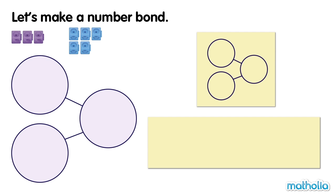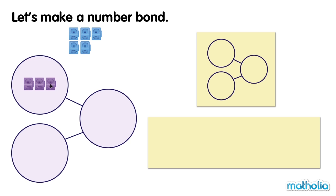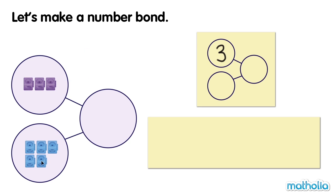How many cubes are there all together? In one part, there are three cubes. Three. In the other part, there are five cubes. Five.